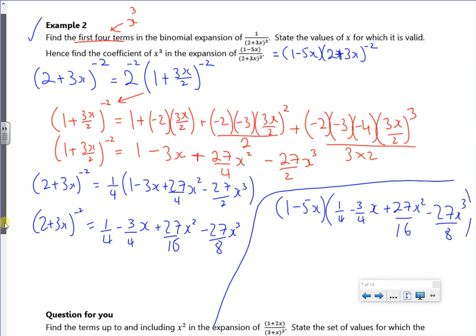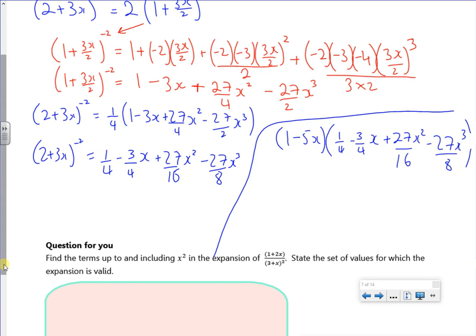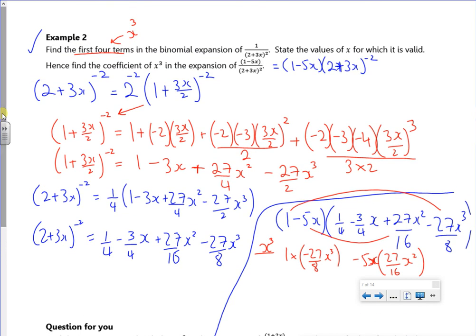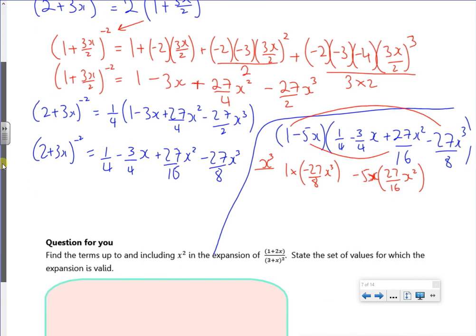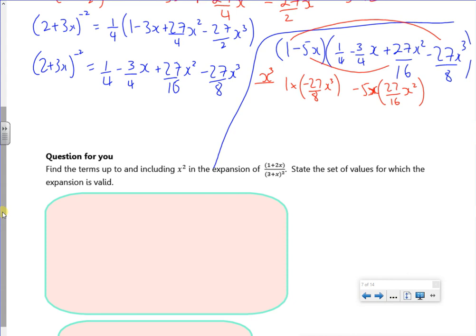So I've got to think, alright, what bits multiplied together to be x cubed? Well 1 times by 27. So I've got 1, so after the x cubed, I've got 1 times by minus 27 over 8x cubed. And I've got minus 5x times 27 over 16x squared. So this is just finding, because the question wanted you, just to find the coefficients of x cubed.